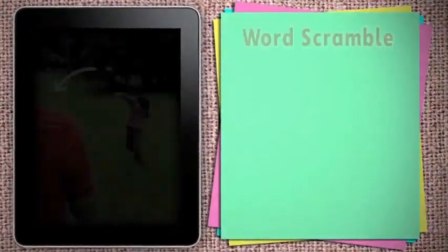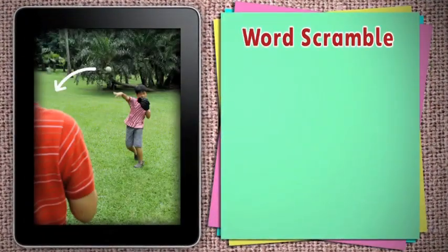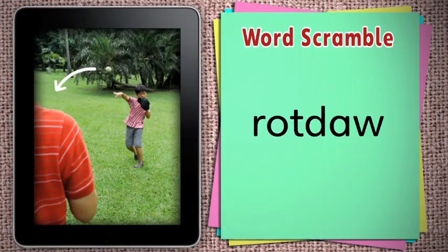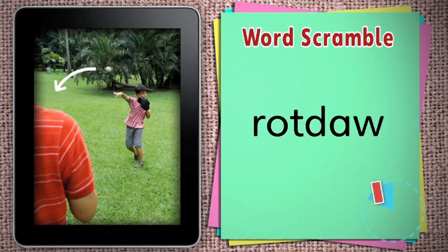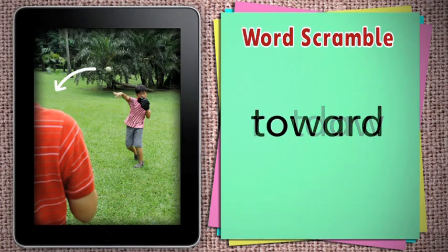Now let's review the words. Unscramble this word. Where is he throwing the ball? Toward. He is throwing the ball toward his friend.